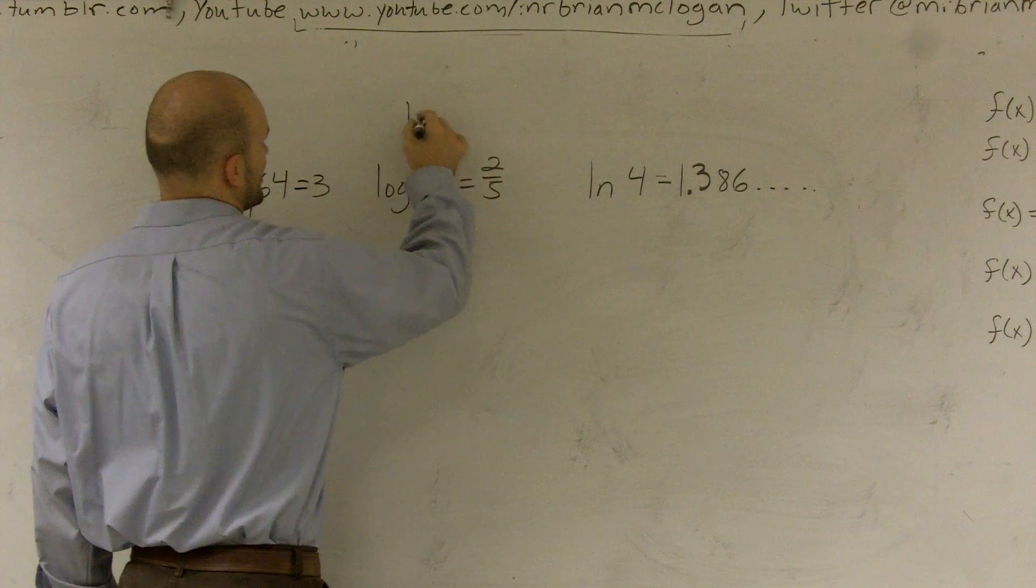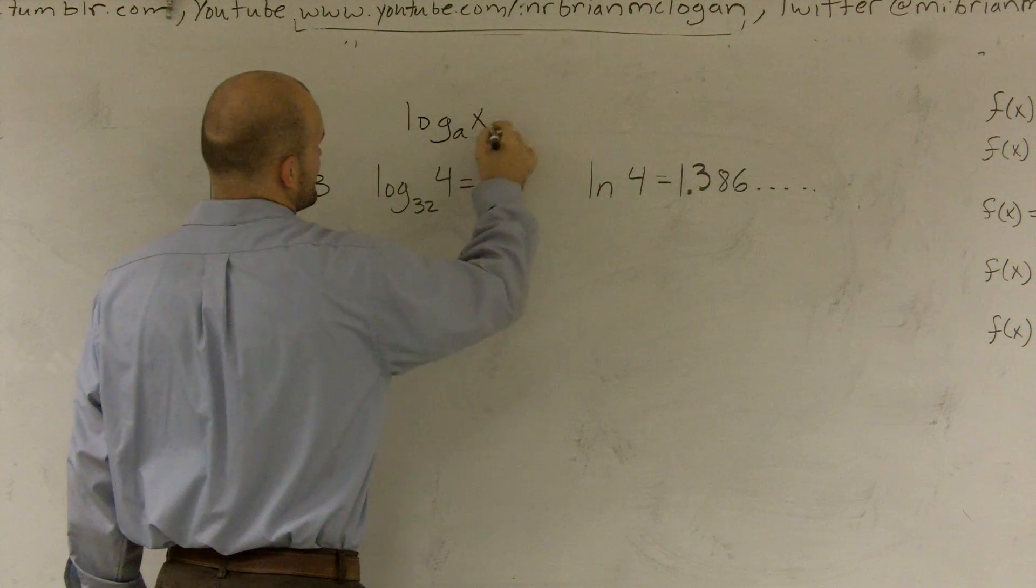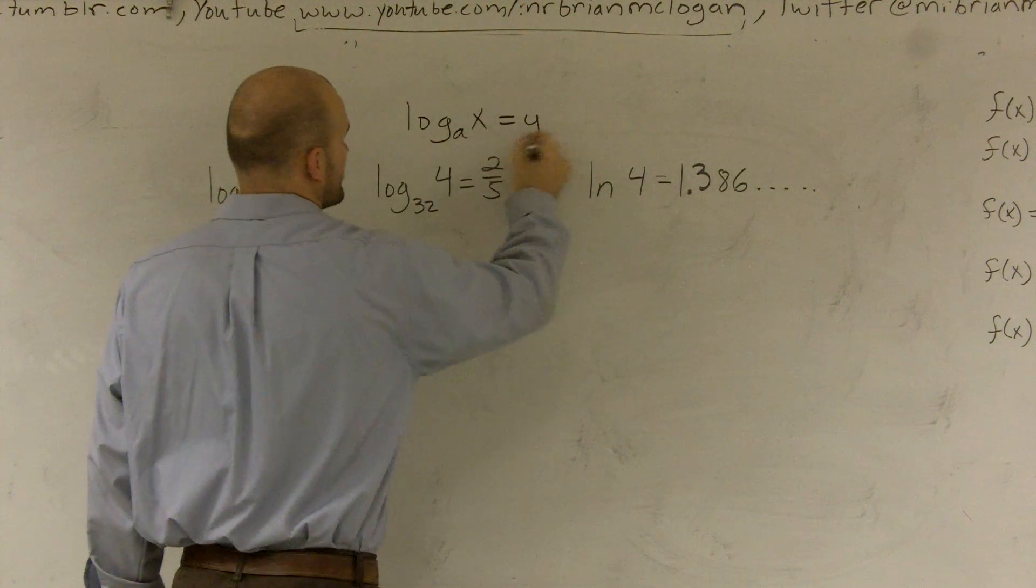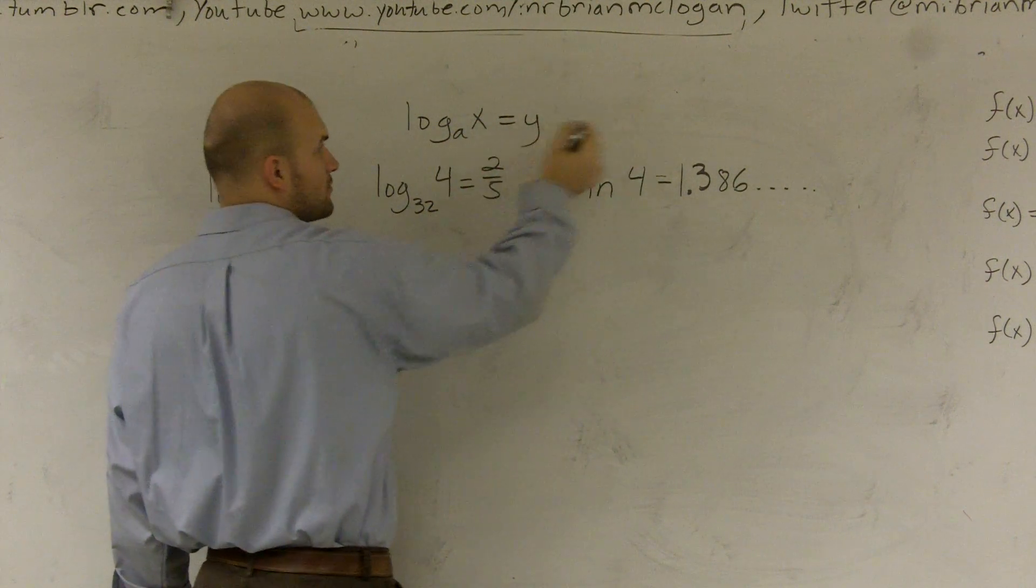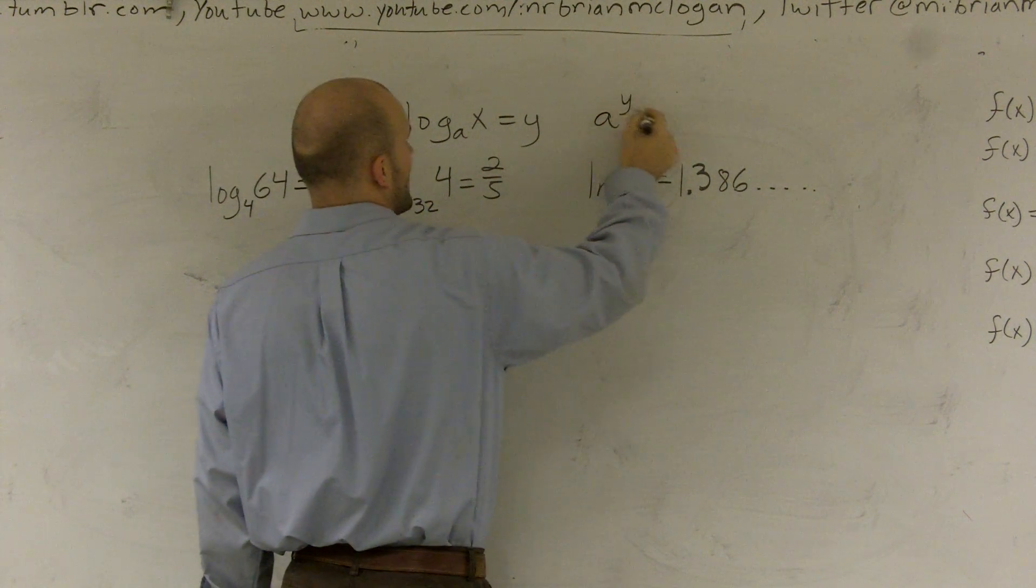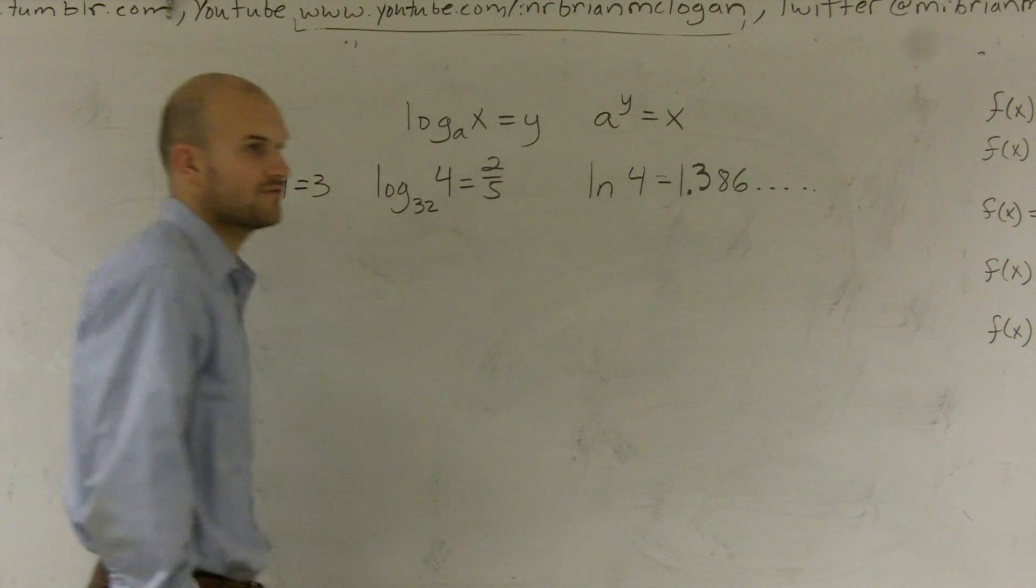So the way I would have to write it is here's log form, log base a of x equals y. And remember, a raised to some number equals x. Well, that answer is y. So therefore, it's a to the y equals x is your exponential form.